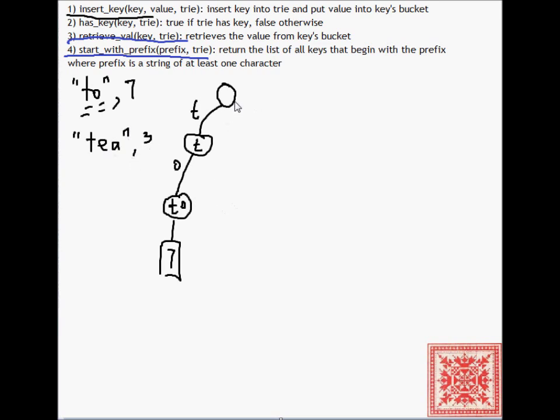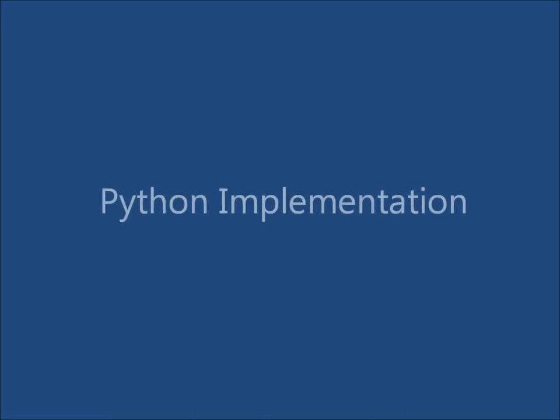Let's say that we want to insert tea and 3 key-value pair. So we have t, reached this node, then e is absent, there's no child branch labeled with e, so we insert it and we get to t, e. And then there's no branch labeled a, so we insert it and we get t, e, a.